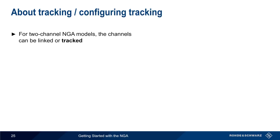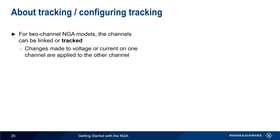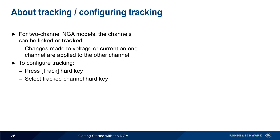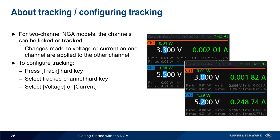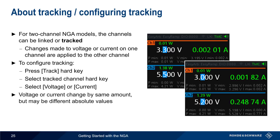On two-channel NGA models, the channels can be linked or tracked. Tracking means that changes made to voltage and current on one channel are applied to the other channel. To configure tracking, press the track hard key, select the hard key for the tracked channel, and then select voltage or current. The blue highlighting in both channels shows the values that are being tracked, and changing the value in one channel automatically changes the other channel by the same amount. Note that although voltage and current will change by the same amount, the absolute values may be different in each channel.